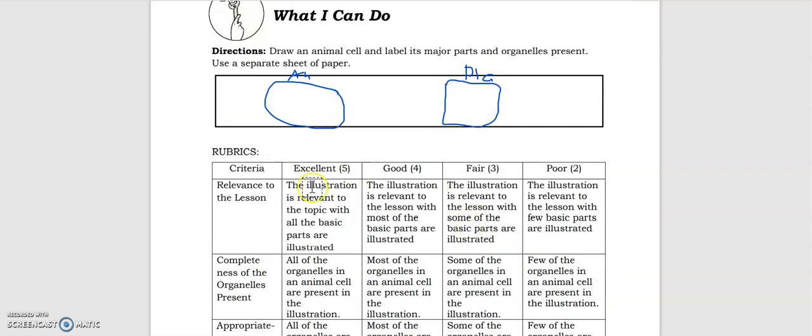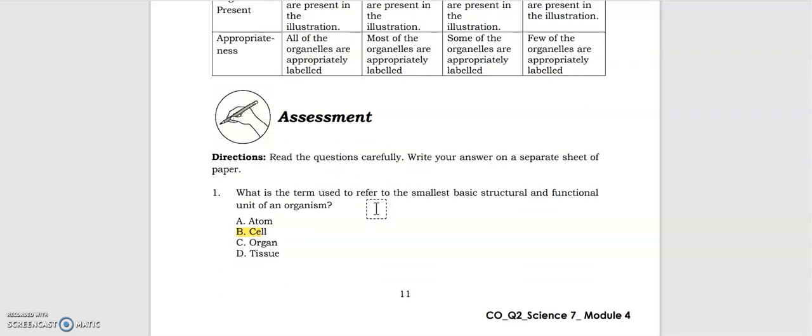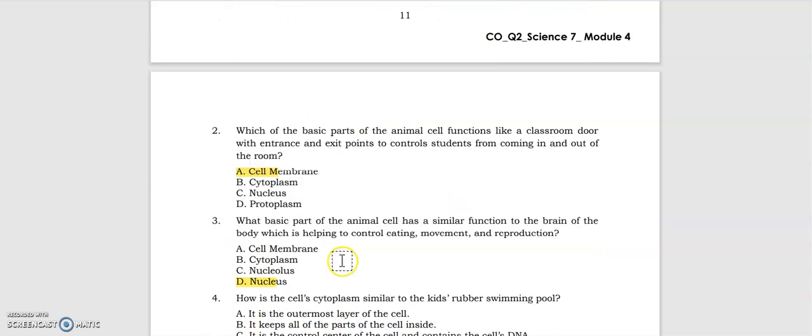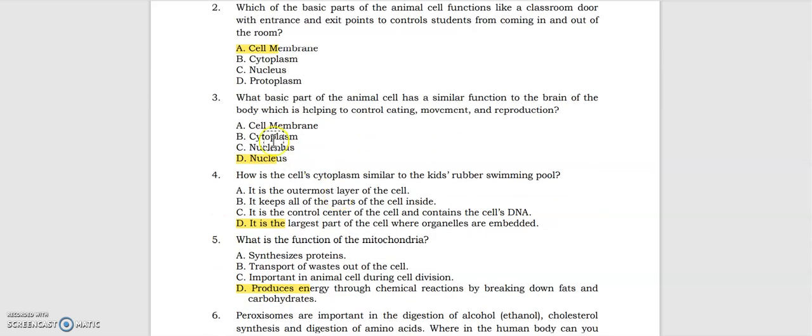And yes, for the assessment: What is the term used to refer to the smallest basic structural and functional unit of an organism? That is cell. Then next, which of the basic parts of the animal cell functions like a classroom door? So it's the cell membrane. Next, what basic part of the animal cell has similar function to the brain? Of course that's the nucleus.